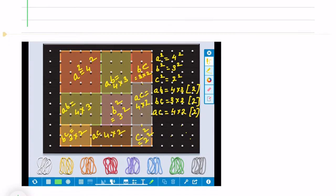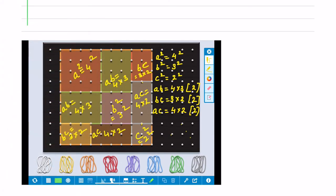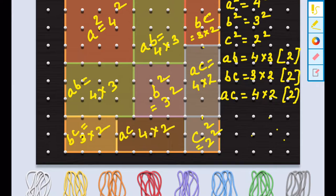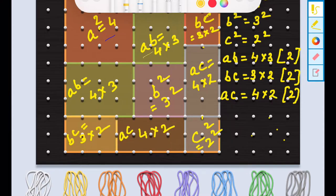We will paste. If you will see that how to paste it, it will be like this where a²=4². a×b is 4×3. b×c is 3×2.